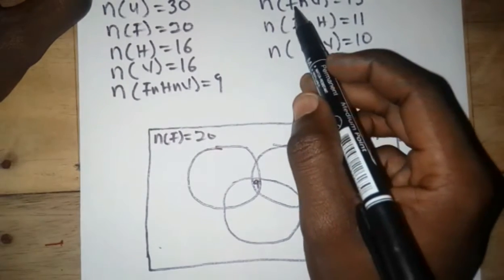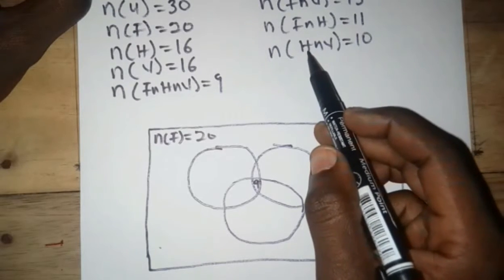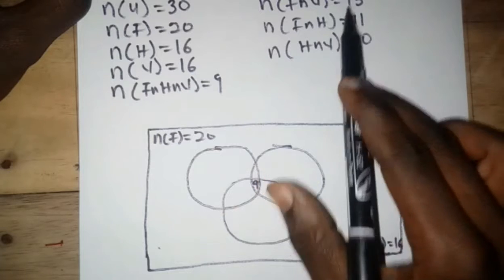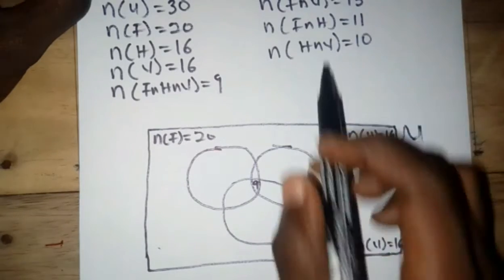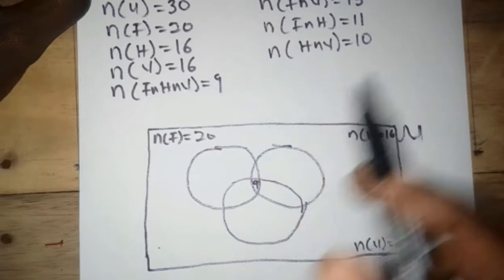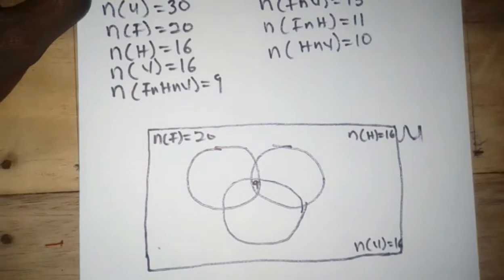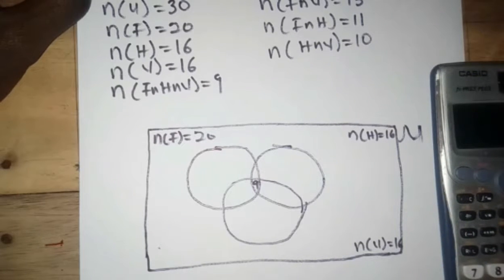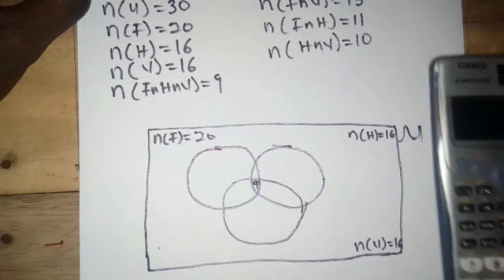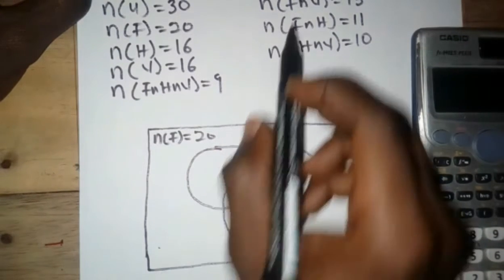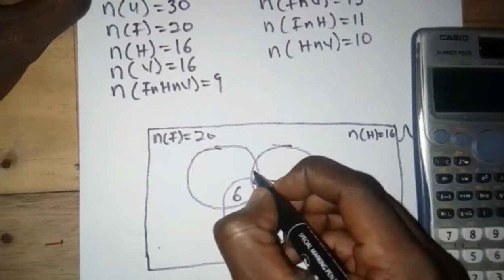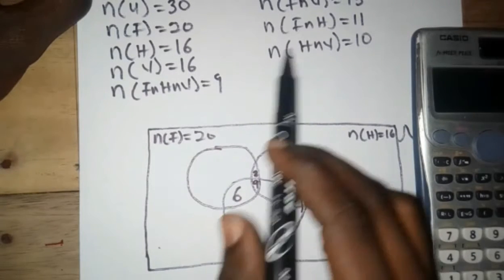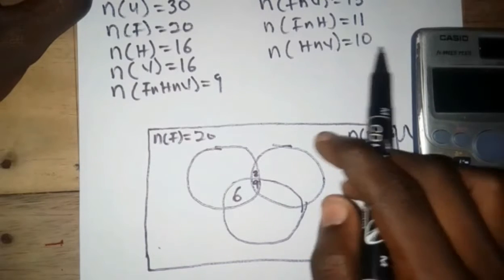Now for football and volleyball, football and hockey, and hockey and volleyball — before placing them, we must subtract the number who play all three games from each pairwise intersection. So: football and volleyball = 15 − 9 = 6. Football and hockey = 11 − 9 = 2. Hockey and volleyball = 10 − 9 = 1.